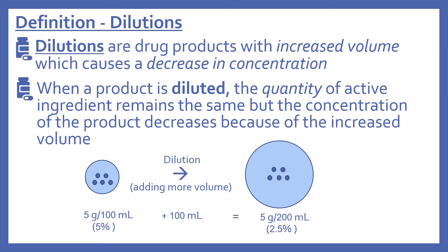I have an illustration here. You can see the small circle with the five dark blue circles inside it. We'll say that's five grams per 100 milliliters, which is 5%. After dilution — adding 100 milliliters — we get five grams per 200 milliliters, which is 2.5%. So the drug amount, the active ingredient, remains the same — five grams in both cases — but the volume has increased. That's what dilutions are about.